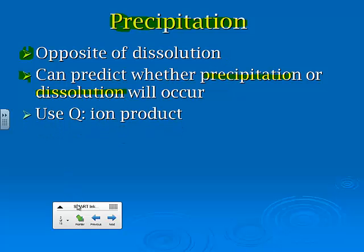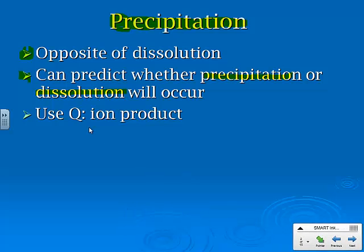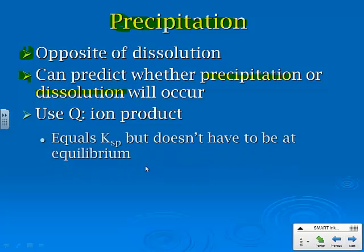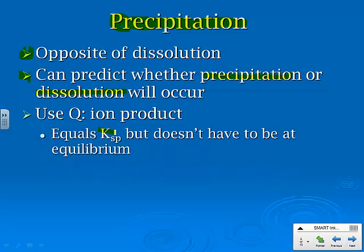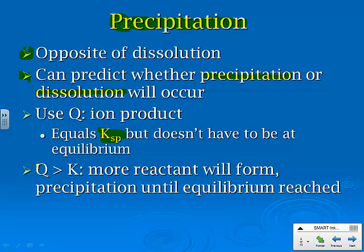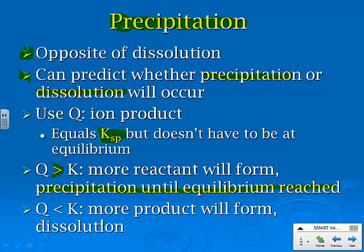We can predict whether precipitation or dissolution, fancy word for dissolving, is going to occur. We use Q again, which is the ion product. We had Q earlier when we were trying to predict if something was at equilibrium or not. Now we have Q as what we refer to as the ion product. It's equal to Ksp, but it doesn't have to be at equilibrium. If Q is equal to K or greater than K, more reactant will form in precipitation until equilibrium is reached. And if Q is less than K, then more product will form, so we'll get dissolution.